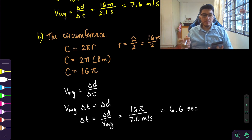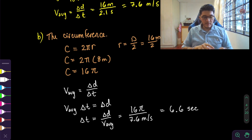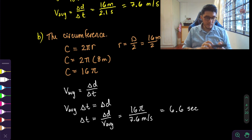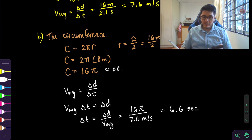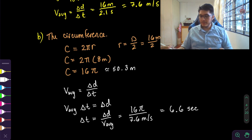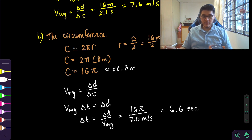By the way, pi is approximately 3.14 — there's a button on your calculator, so just look for π. What I did is put in 16π, which is approximately 50.3 meters — make sure you're able to get that value to check your answers. That's it for this part. I'll be showing you the other questions from section 1.1 in my other videos, so make sure you hit subscribe to see the next videos.